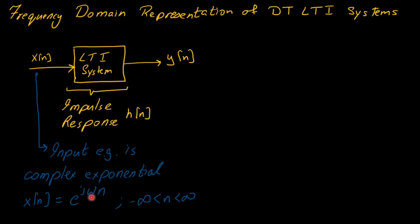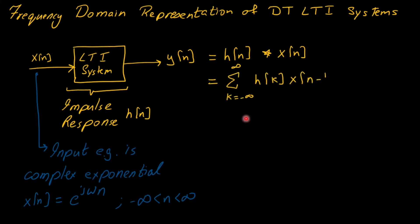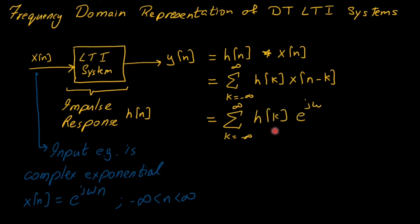If we give this input to the LTI system, we can calculate the output y of n as a convolution of the impulse response h of n with input x of n. From the convolution sum equation, we shift h of n to h of k and flip x of n to x of minus k, then swap with respect to n. The convolution summation from minus infinity to infinity is h of k times x of n minus k.